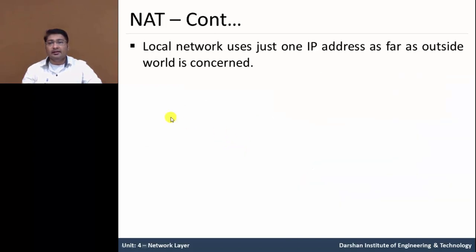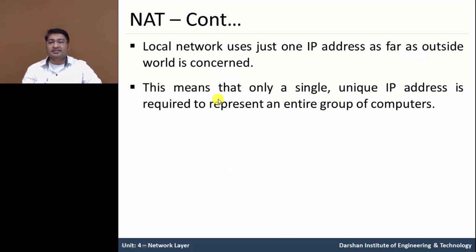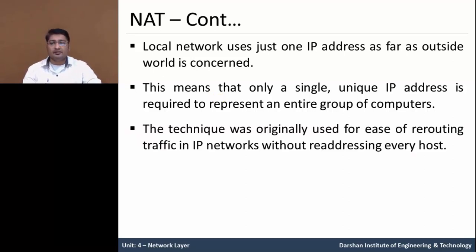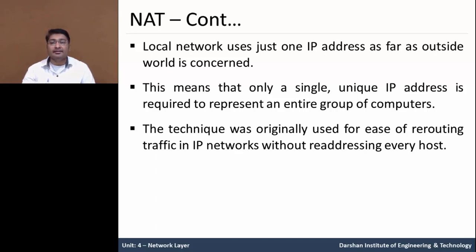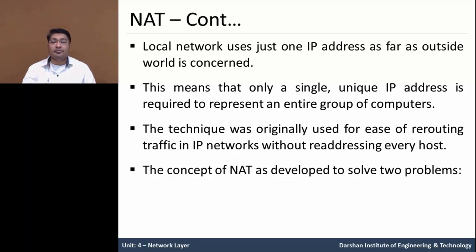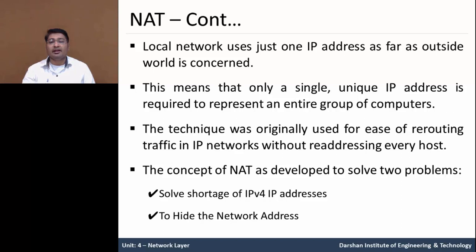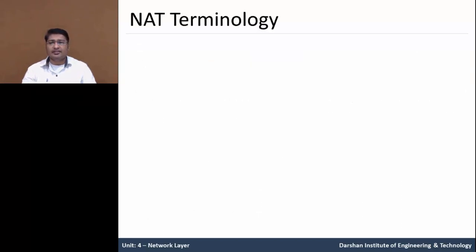The local network uses just one IP address as far as the outside world is concerned. This means only a single unique IP address is required to represent an entire group of computers — the entire subnet network. The technique was originally used for easy rerouting of traffic in IP networks without re-addressing every host. This concept was developed to solve two problems: to solve the shortage of IPv4 addresses, and also to hide our internal network address.